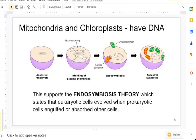We're now talking about our animal cells here, which is our eukaryotic cells. We want to show you here that this represents the endosymbiotic theory, which states that eukaryotic cells evolved when prokaryotic cells engulfed and absorbed other cells.